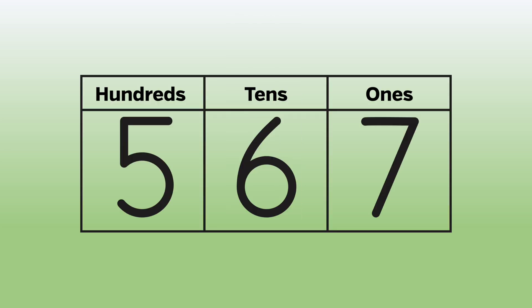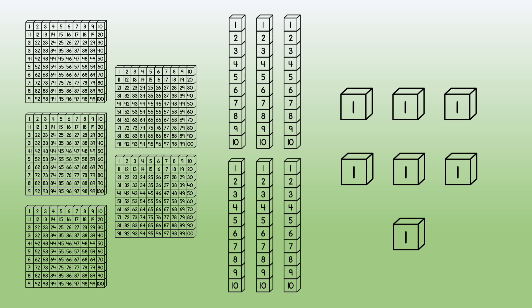And in the ones place, we have a seven. That's seven bits or seven ones. One, two, three, four, five, six, seven. Here's what the number 567 looks like in base 10 blocks.